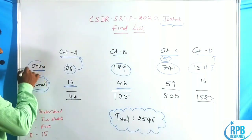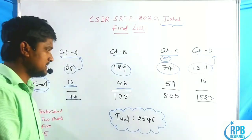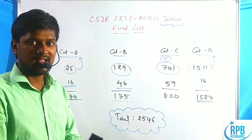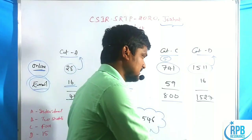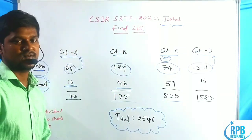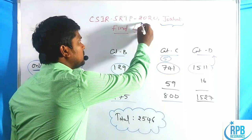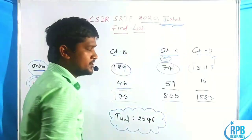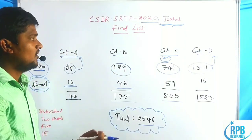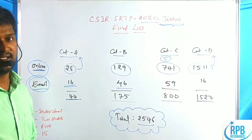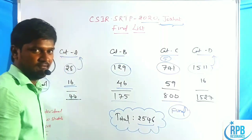In total across online and email applicants: Category A has 44 members allotted an individual project, 175 members are allotted a two-member combined group project, 800 members are allotted a five-member group project, and 147 members are allotted a large 15-member community project. The total CSIR SRTP 2020 Jorhat institute has allotted 2,546 students.